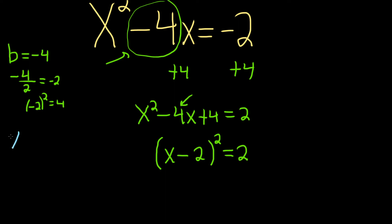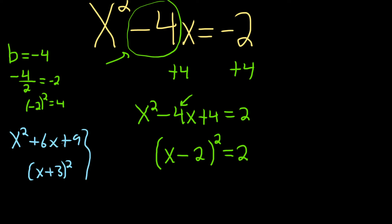As another example, say we had completed the square on something like this. You would take the x, keep the sign, and divide by 2 — so you'd get 3. Every time. If this was a plus, then this would be a plus. So it's just memory: divide it by 2, keep the sign.